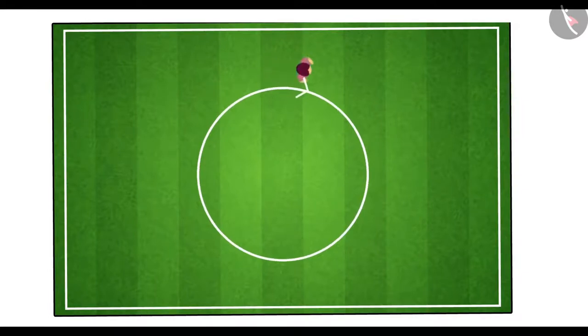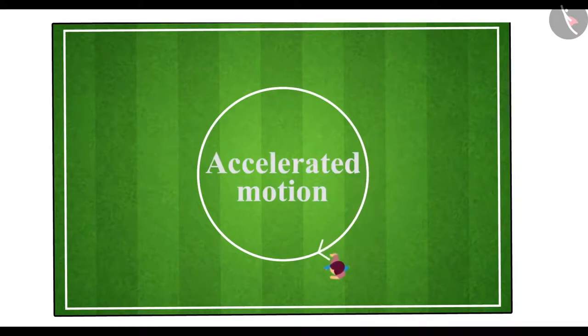Now if the athlete moves along the circular path at a velocity of constant magnitude, then the change in her velocity is only due to the change in direction of motion. Therefore we can say that the motion of an athlete on a circular path is an example of accelerated motion.